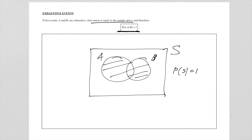When the union equals the sample space, we can say the probability of A or B is equal to 1, because the probability of the sample space is always 1. If the probability of the OR is 1, that means it equals the sample space, meaning the two events are exhaustive. This will become very clear after we look at the third type of special event.